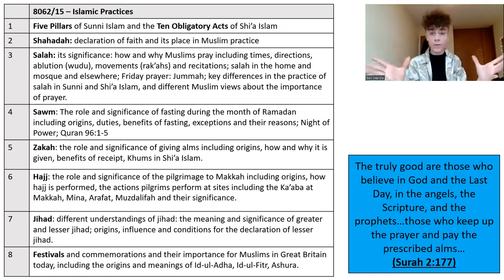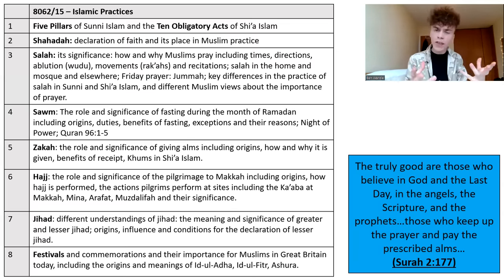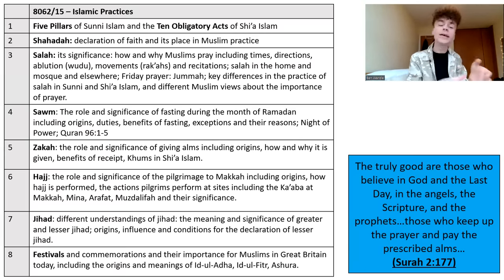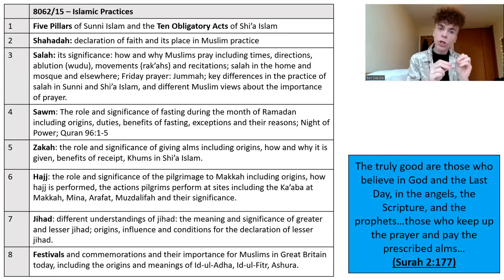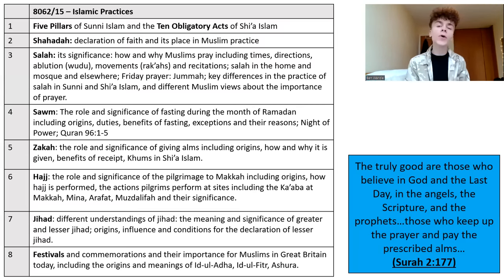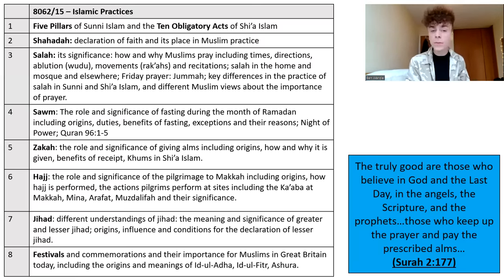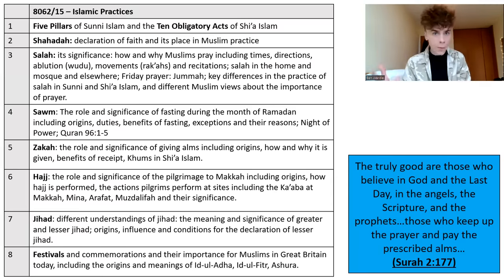We're going to start with an overview of the five pillars of Sunni Islam and the ten obligatory acts in Shia Islam — why are they important, why have they been chosen, and what is the purpose of having them? Then we'll zoom in and take a closer look at Shahada, the Declaration of Faith; Salah, including the significance of prayer, how and why Muslims pray, where they pray, Friday prayers, and key differences between Sunni and Shia beliefs about prayer.